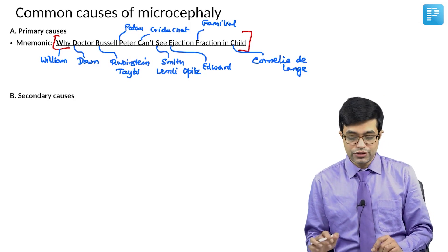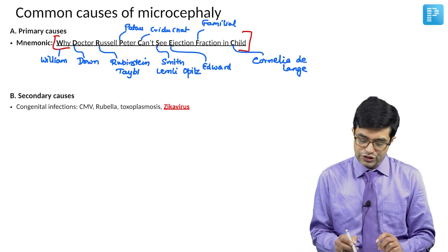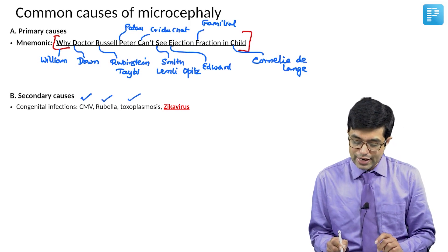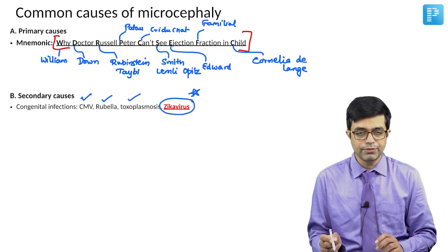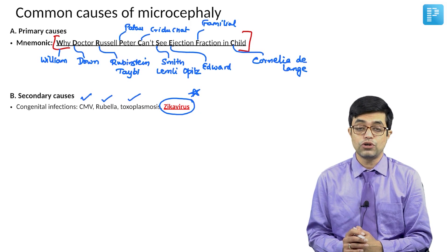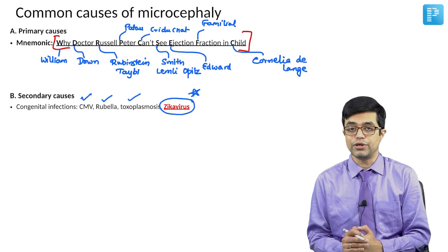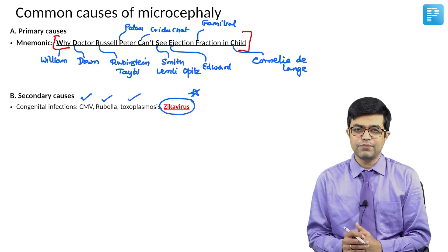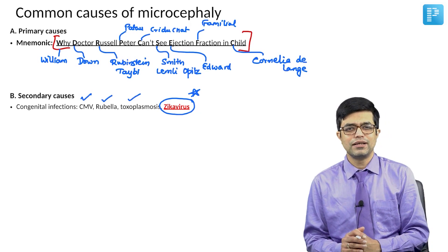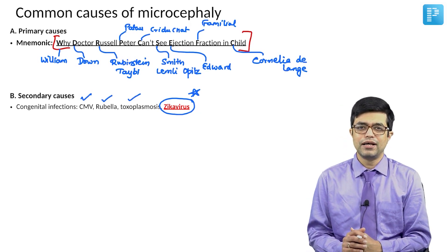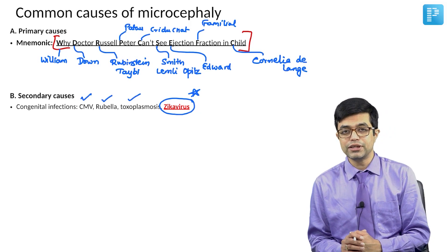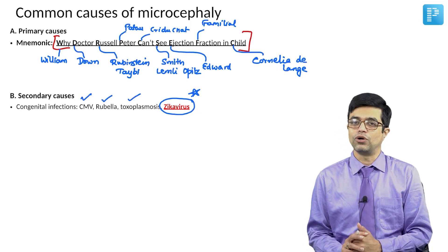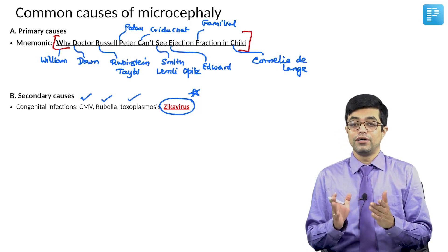Next, we move to the secondary causes. The secondary causes include congenital infections like congenital CMV, congenital rubella, congenital toxoplasmosis, and Zika virus. Zika virus is a hot trending topic because congenital Zika virus infection is one of the common causes of microcephaly. The disease has been known since the 1950s, but it frequently causes epidemics and sometimes pandemics, restricted pandemics every few years. The current one started in Brazil, Argentina, and Chile and is currently still ongoing.